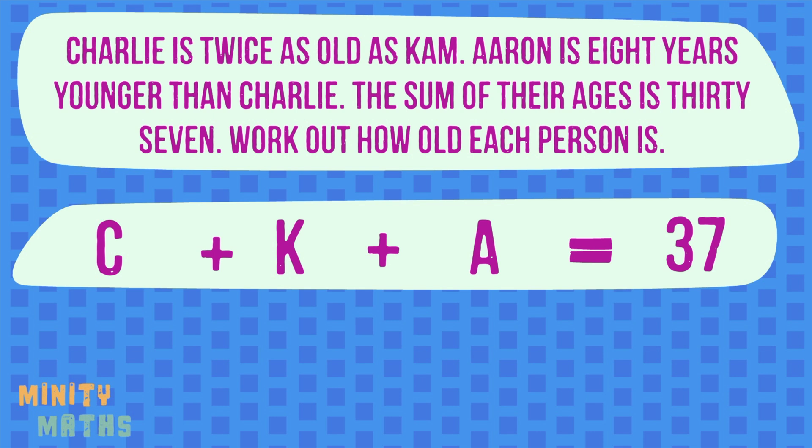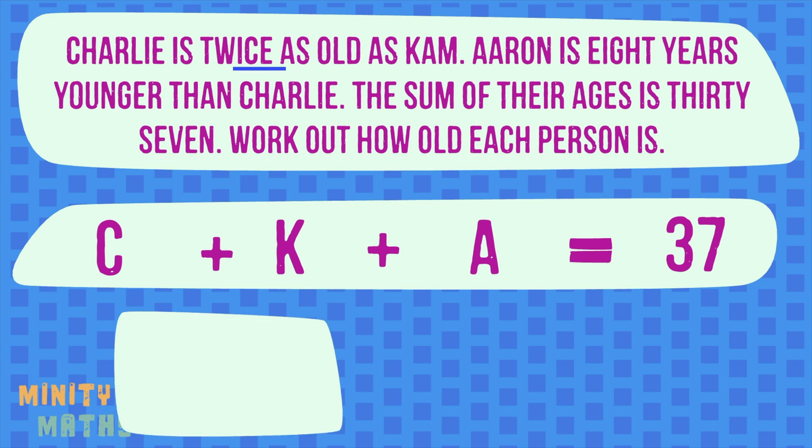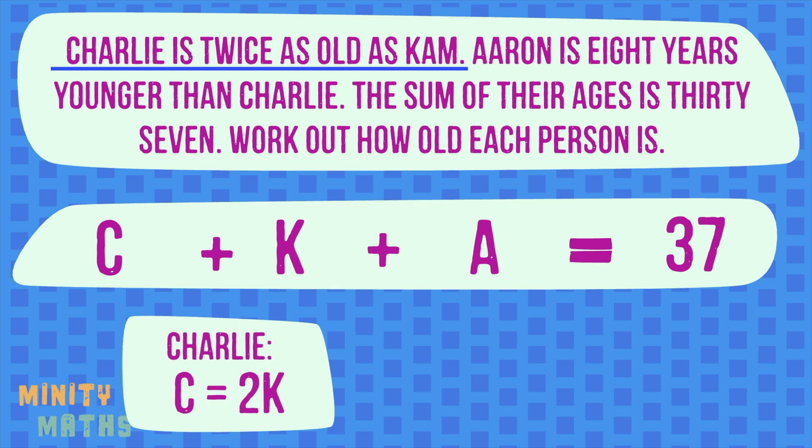However, we can't solve this equation when it is written like this because we have too many variables. So we need to rewrite their ages using the information given in the question — we need to make sure we end up with only one variable. Underlining the key points in the question can help you to pick out the clues needed to write an expression for each age.